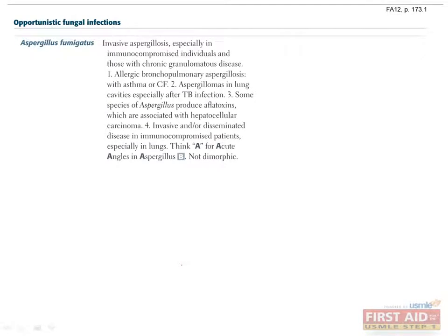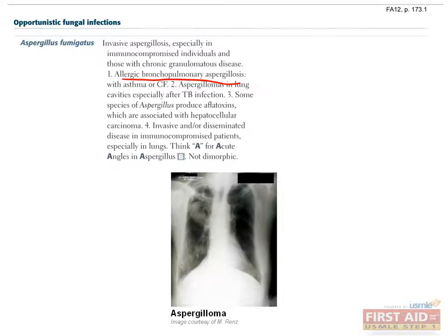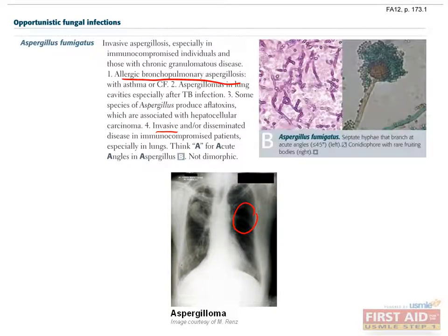Aspergillus fumigatus is a fungus that causes various lung diseases in immunocompromised hosts. It can stimulate an IgE response leading to bronchospasm, known as allergic bronchopulmonary aspergillosis. It may deposit in an existing lung cavity and form an aspergilloma, or fungus ball. Some aspergillus species can produce aflatoxins, which have been linked to hepatocellular carcinoma. It can also invade lung tissue and the bloodstream, leading to blood vessel occlusion and pulmonary infarction, known as invasive aspergillosis. Aspergillus is found in wheat stacks and grows as mold on decaying vegetation, so you may suspect this in farmers. Its characteristic form is branching septate hyphae that branch at 45 degrees. You may also see aspergillus on Step 1 as a fruiting body.